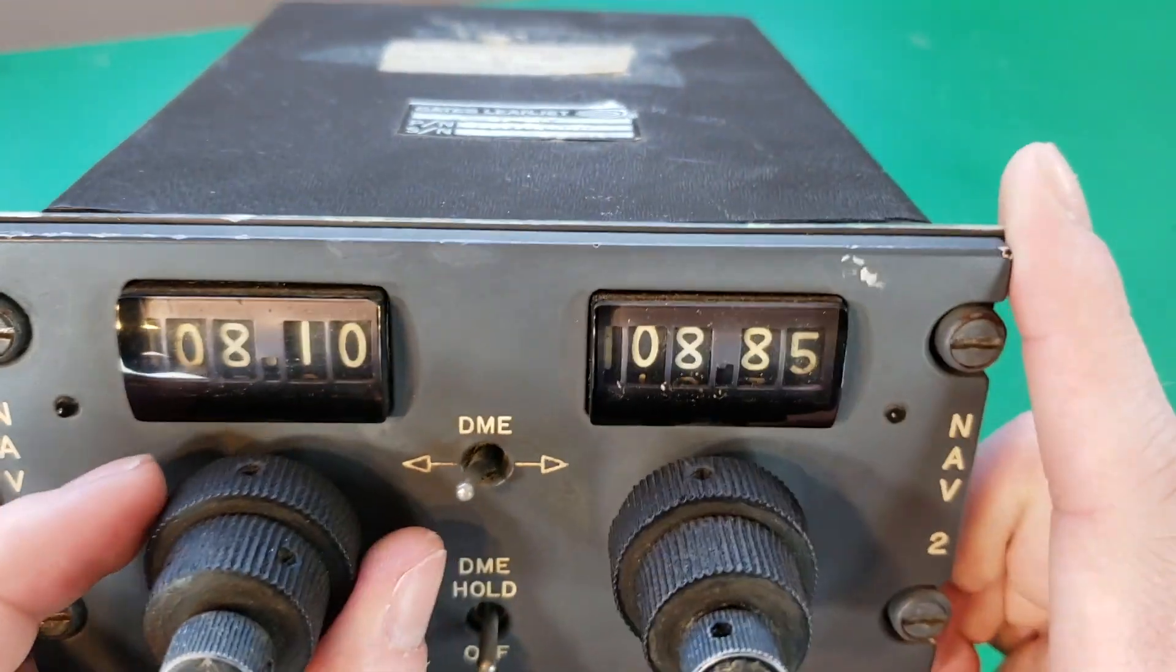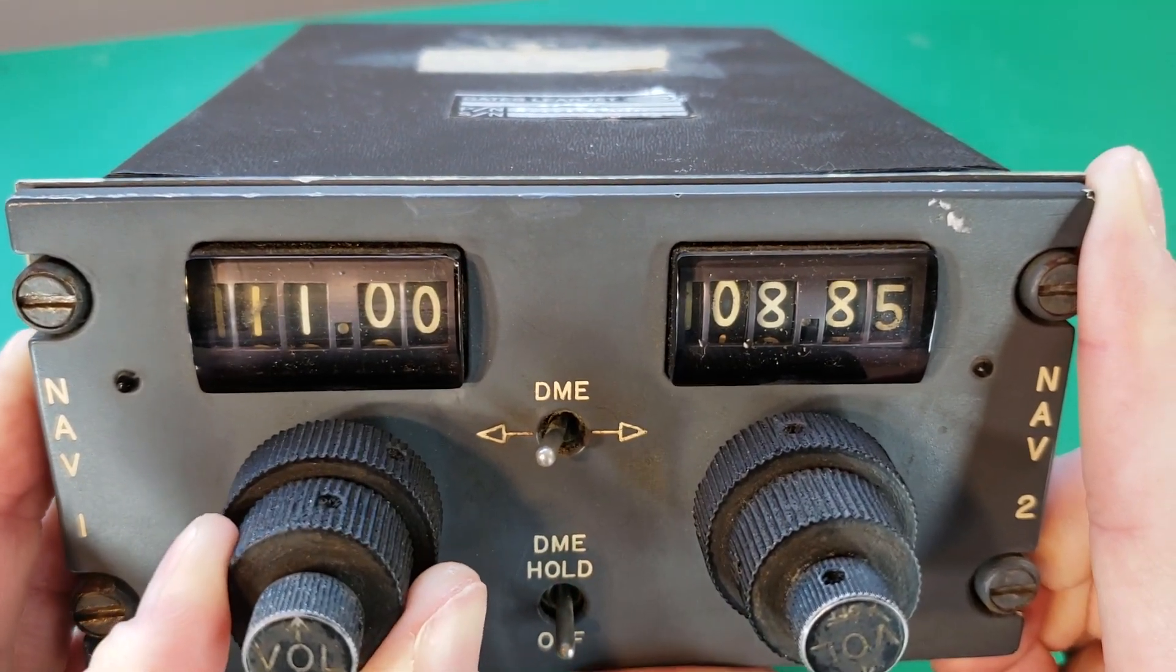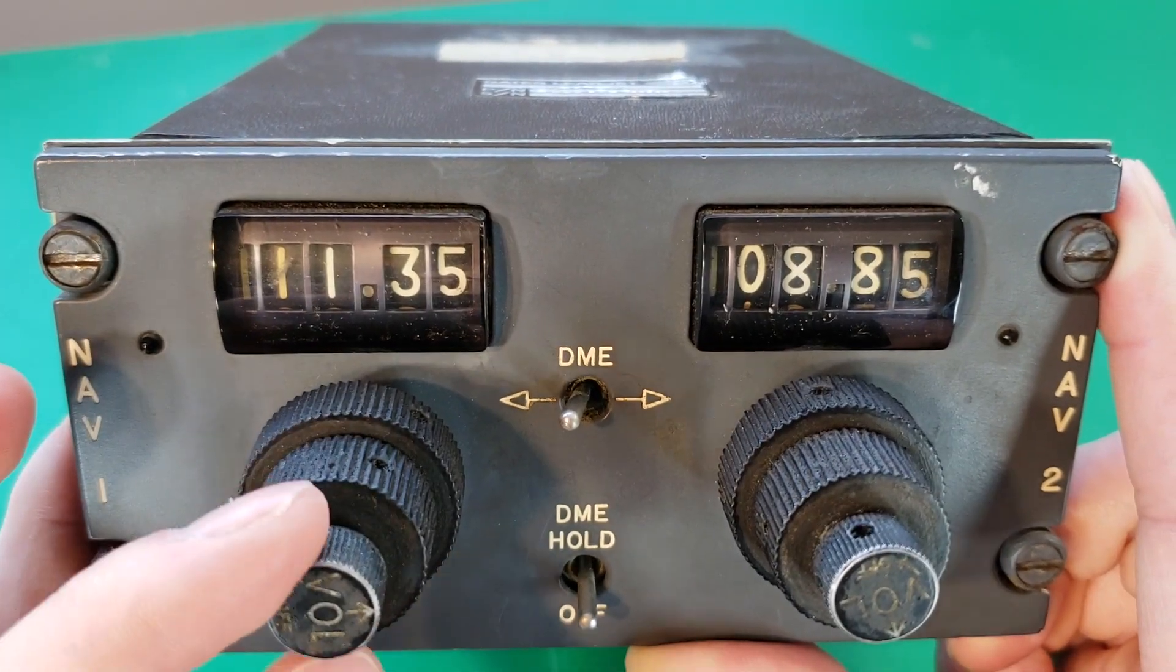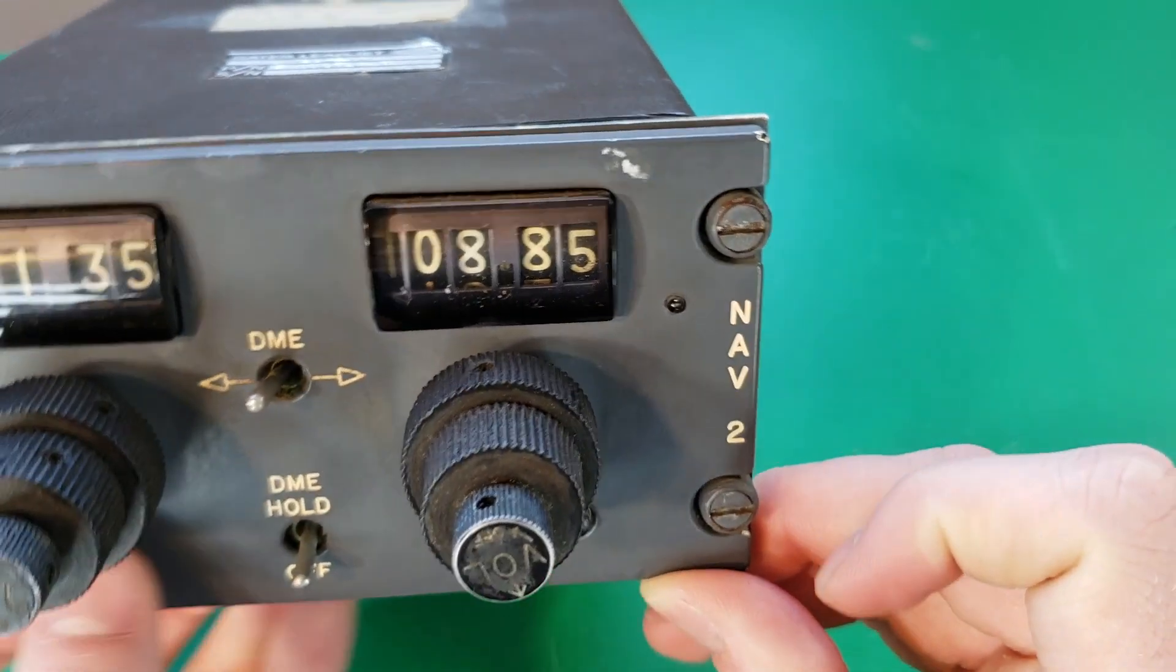The largest knob here adjusts the whole numbers, and the slightly smaller knob adjusts the fractions, and the final knob here is a volume knob, and we have the same thing for the other side here.